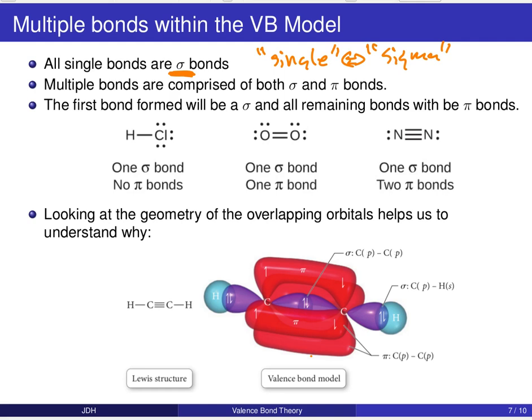Single is sigma. All right, now multiple bonds are going to then be comprised of the sigma bond plus additional pi bonds. So the first bond formed will be sigma. All remaining bonds will be pi bonds. So in this example here, we've got just HCl. There's only one bond, so you get one sigma bond and no pi bonds. If you have O2, two bonds, one sigma, one pi. N2, one sigma and two pi bonds.